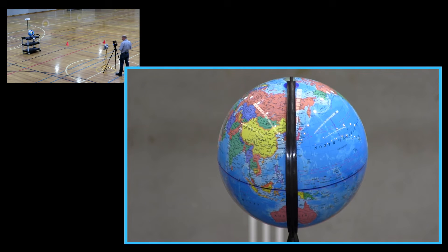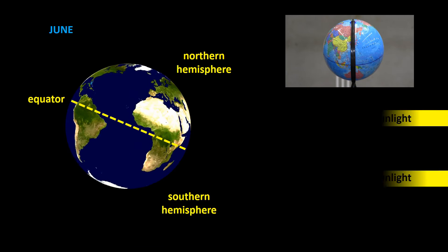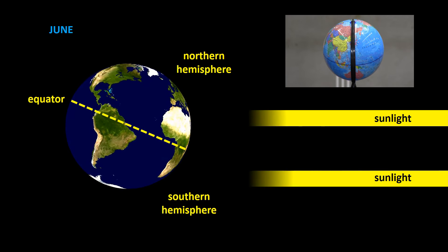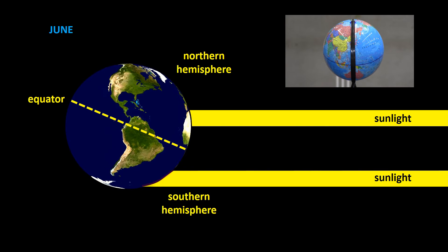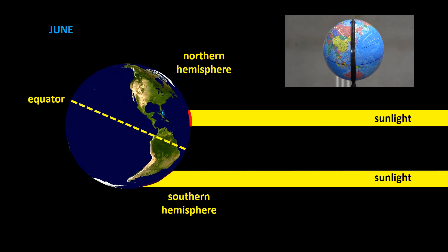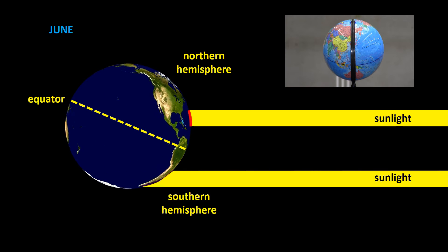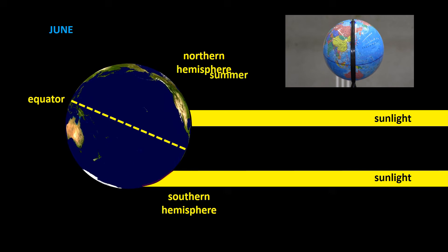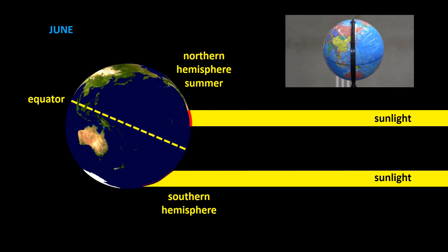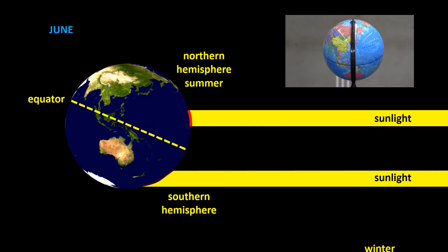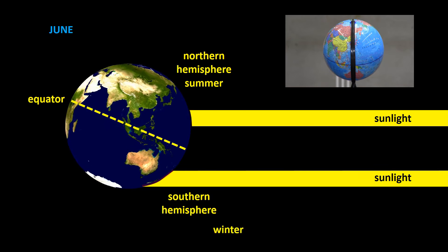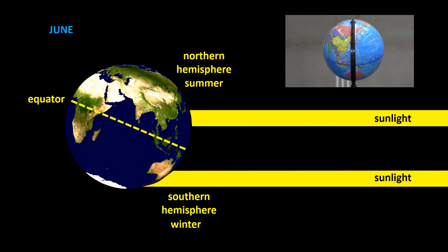Although, obviously, the real Earth is continuously rotating. Now the Sun is shining more directly onto the Northern Hemisphere, so the Northern Hemisphere experiences summer, while the Southern Hemisphere experiences winter.